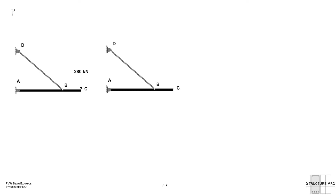The P system has our real 280 kN load at C, and the Q system has a virtual load Q applied at C. These are our real and virtual systems, just as a reminder.